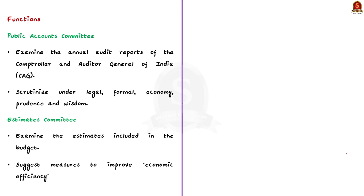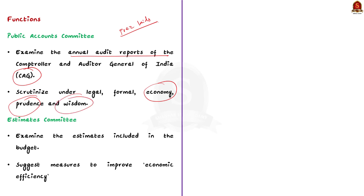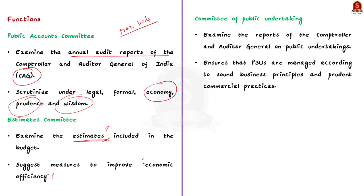The main function of the PAC is to examine the annual audit reports of the Comptroller and Auditor General of India, which are laid before Parliament by the President of India. The committee examines public expenditure not only from the legal point of view but also from the point of view of economy, prudence and wisdom. The main function of the Estimate Committee is to examine the estimates included in the budget and suggest measures to improve economic efficiency of public expenditure. The main function of the CPU is to examine the reports of the CAG on public undertakings and to examine whether PSUs are managed according to sound business principles and prudent commercial practices.